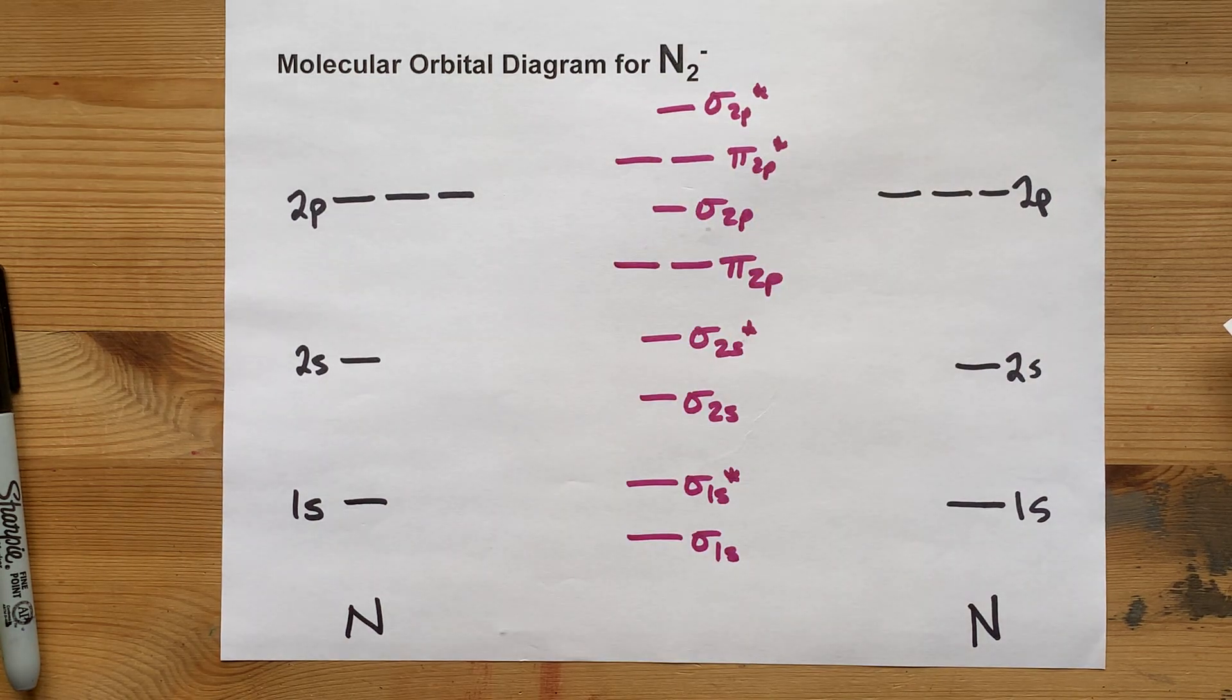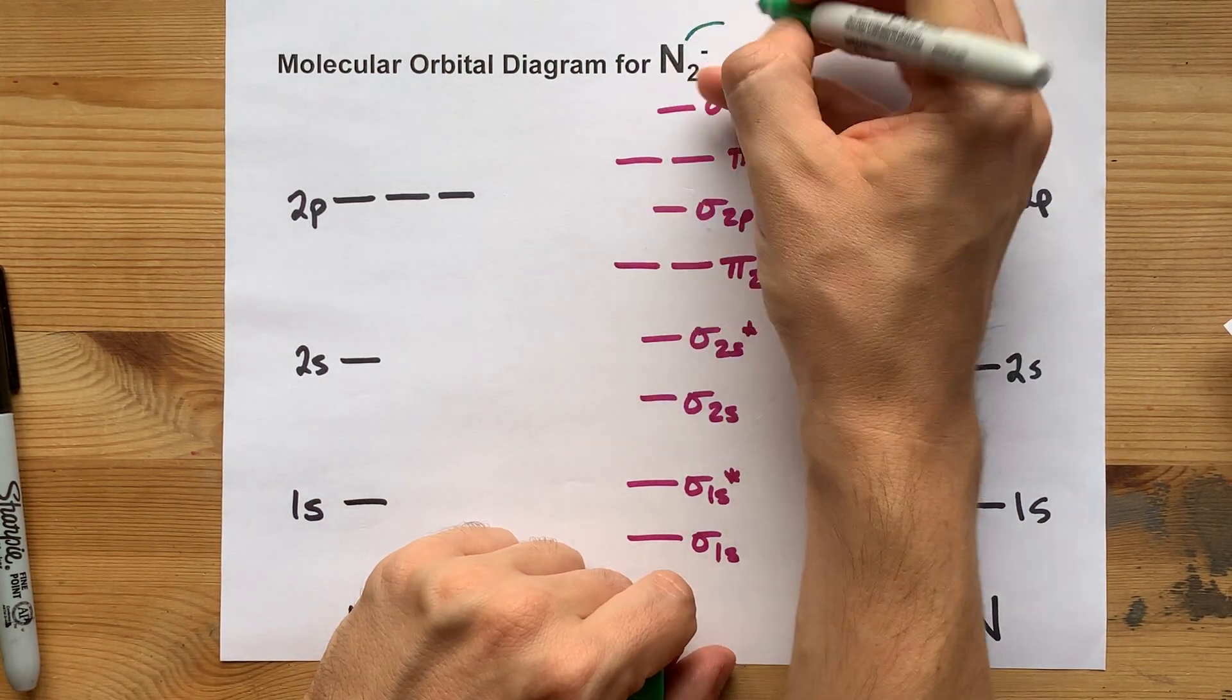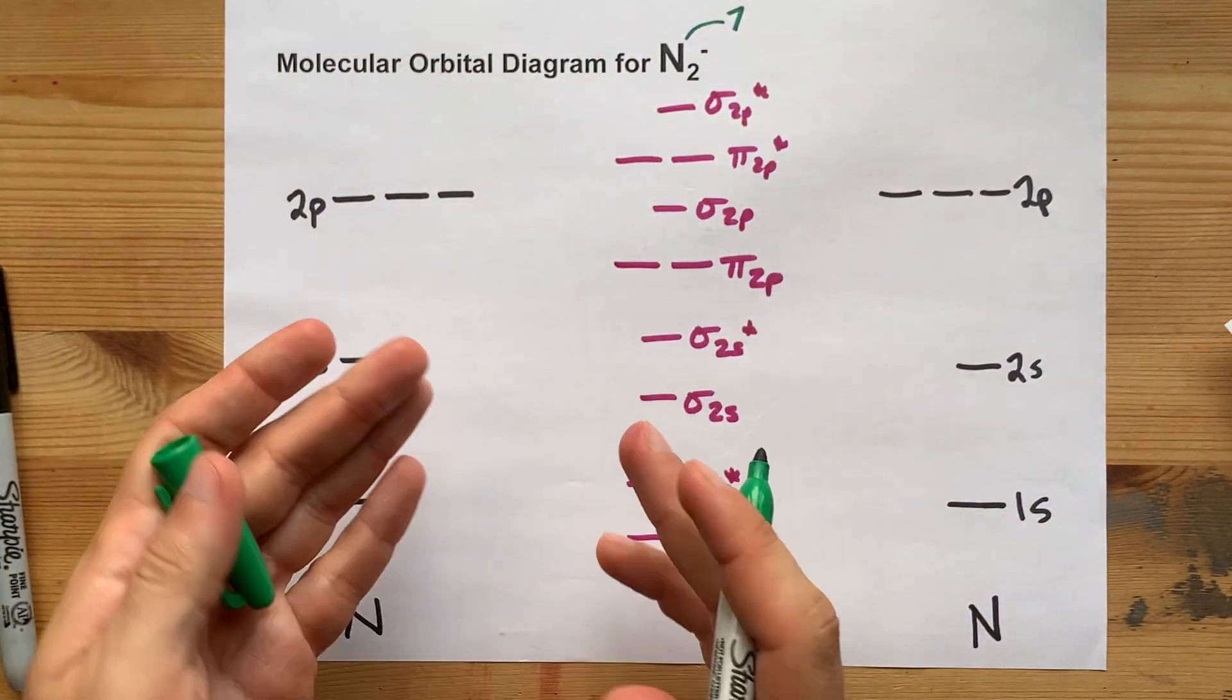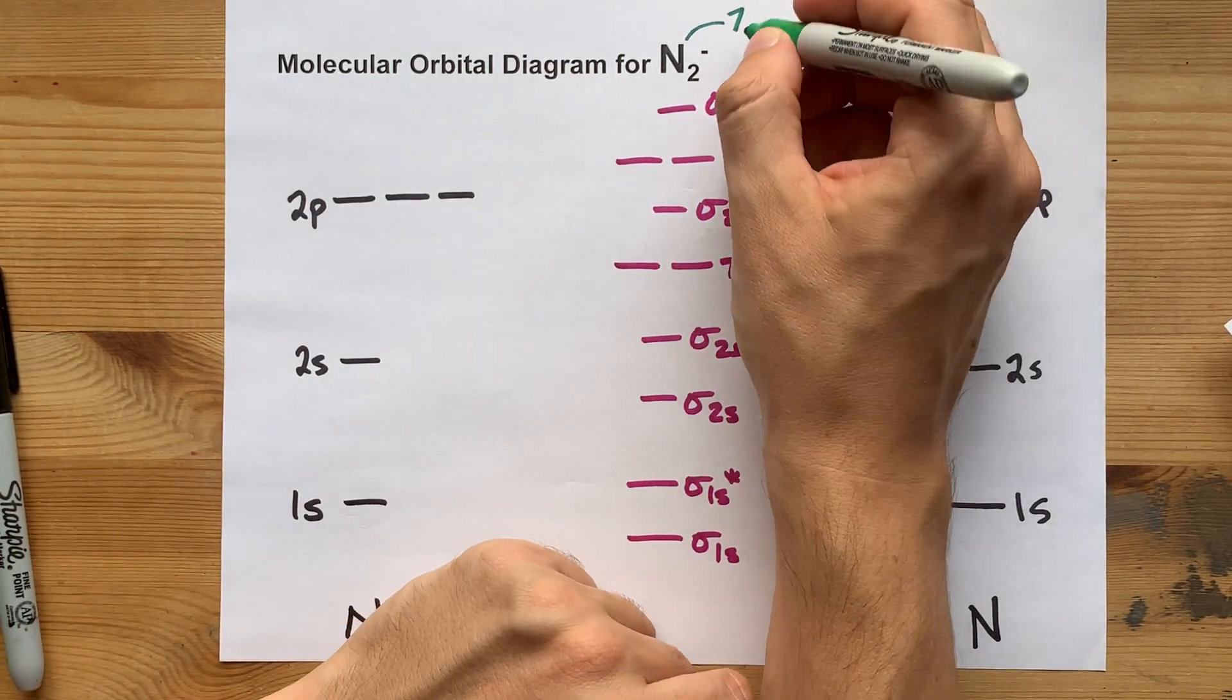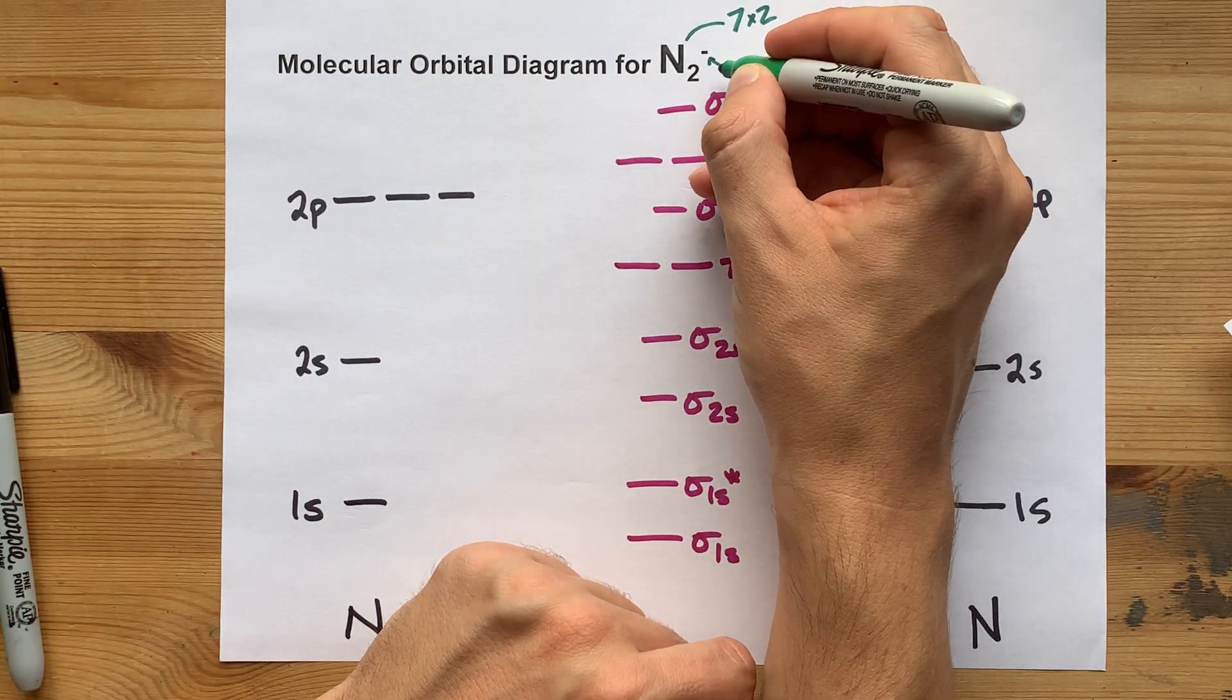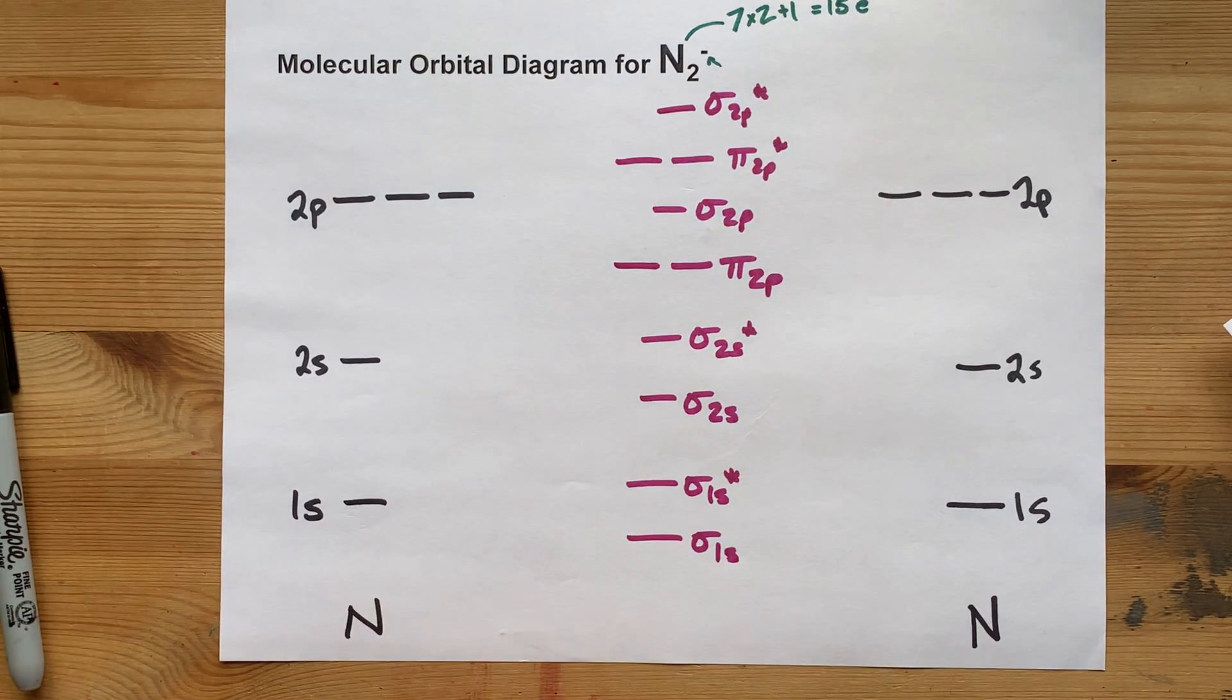Let's fill this with electrons. I included the inner shell, which means nitrogen's bringing 7 electrons each. I know there's only 5 valence electrons, but there's 7 total, and I'm including that first shell. Well, there's 2 of them, and because there's a minus charge on this, there's an extra bonus electron. That gives me 15 electrons total.